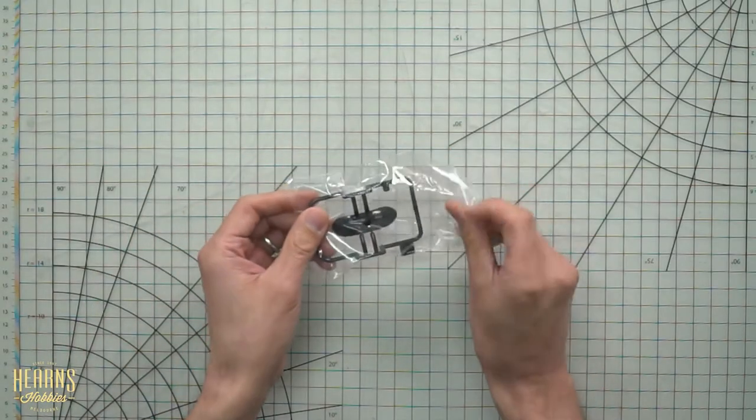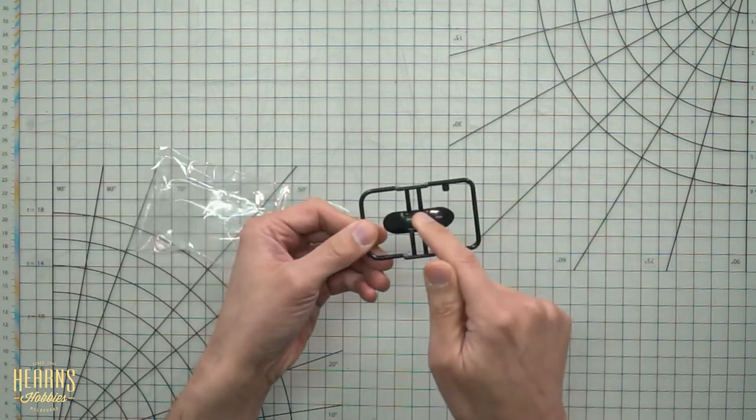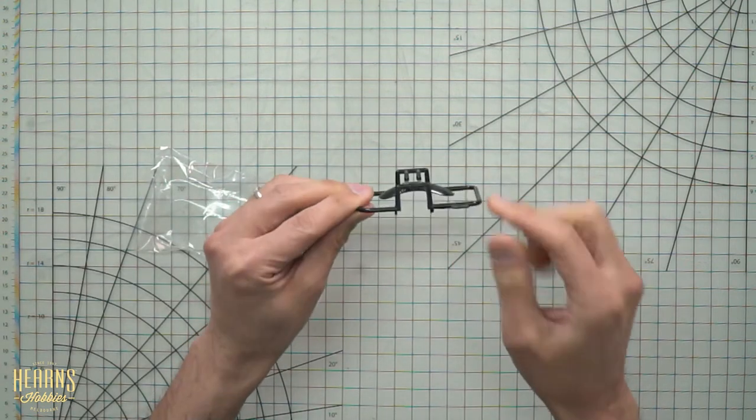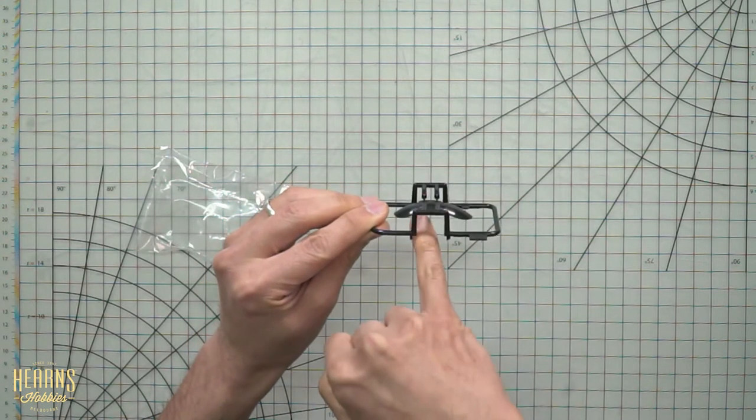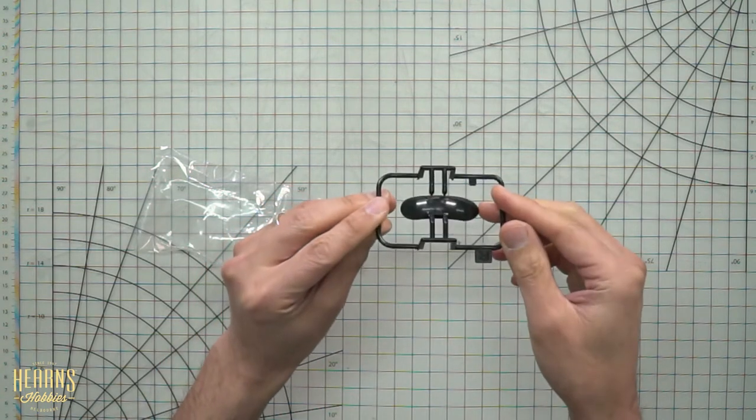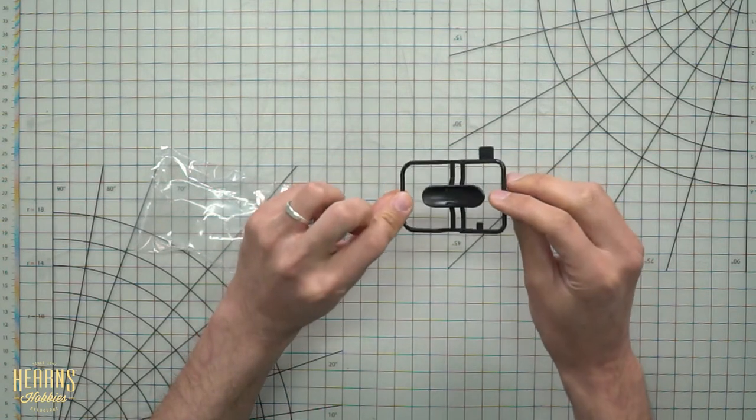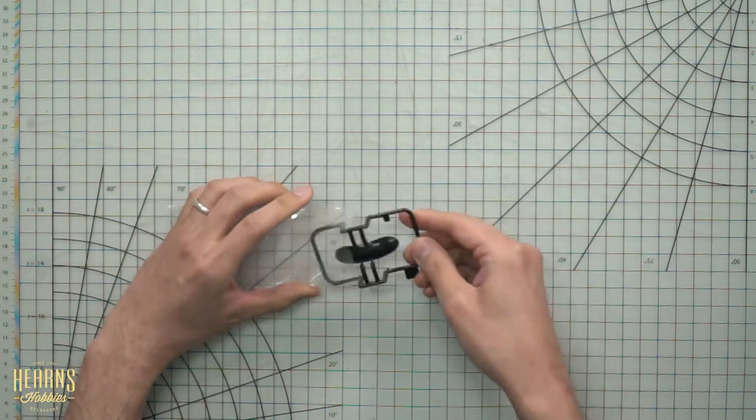So here we have the front mudguard. Super smooth, again has been slide molded. So across here we've got the holes for mounting it onto the forks. Quite sophisticated the way they do that.